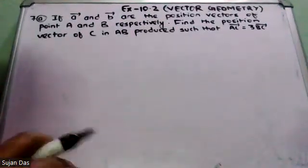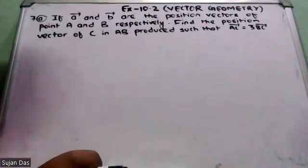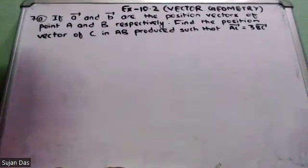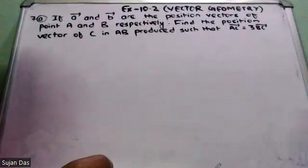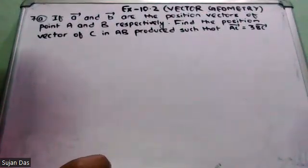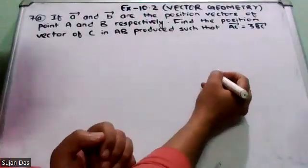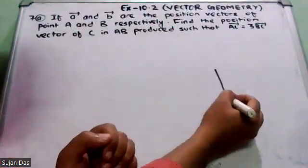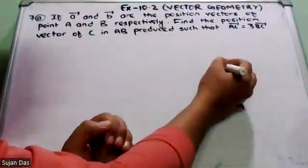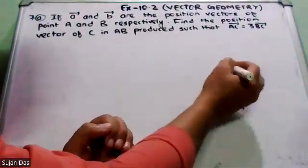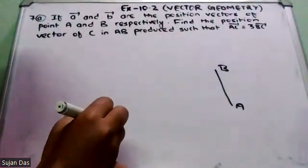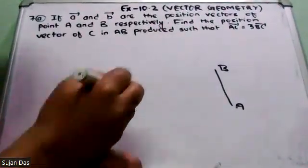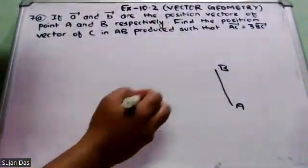This is SI 1022 question number 7A. If vector A and vector B are the position vectors of points A and B respectively, let's say this is A, this is B, and the position vector of point A and B respectively.